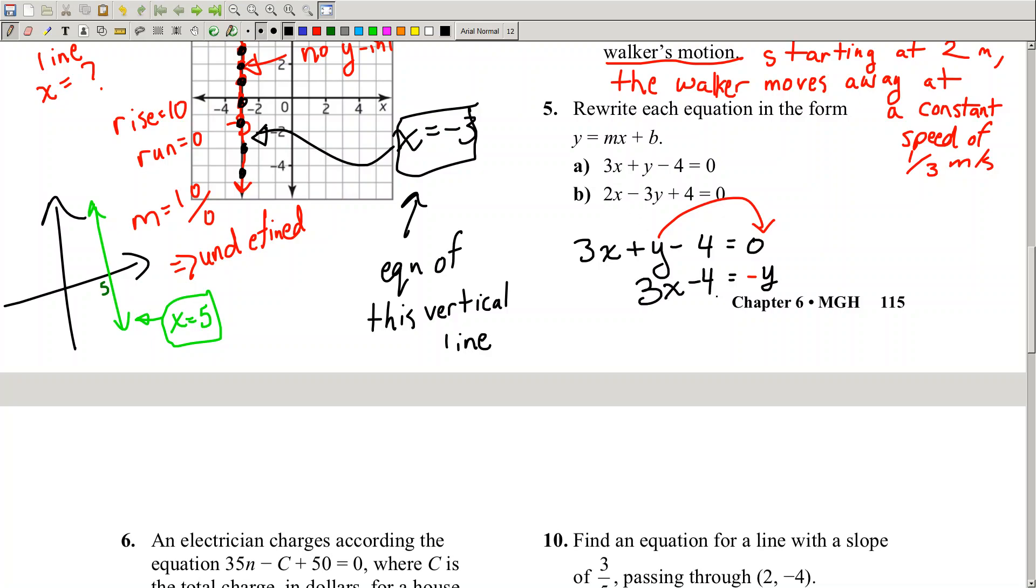What do you have left on the left side? Well, I've got 3x minus 4. That's what stays. So we've got 3x minus 4. Now, what number is in front of y? It's a minus 1.